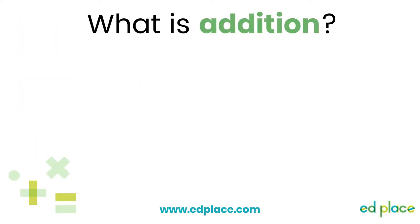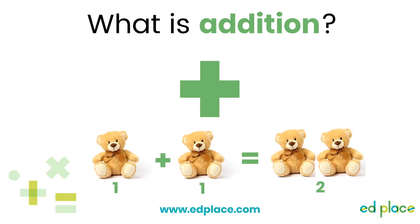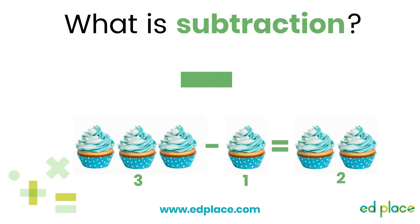Before we get going, it's important to understand some key ideas that will help us with this lesson. Firstly, what is addition? Addition is when we add two or more given numbers together to find a total. You may use objects like counters or a number line to help you add. Subtraction, or taking away, means we can find the difference between two numbers. We must always subtract the smallest number from the largest.